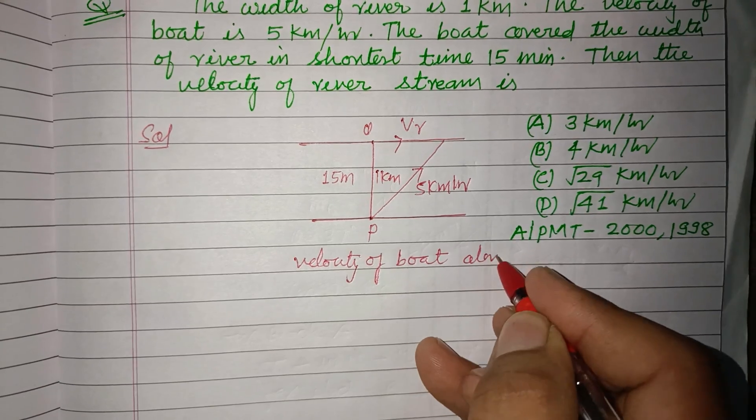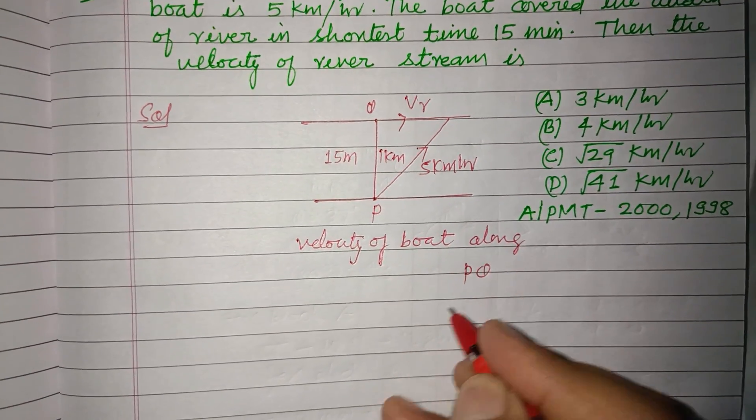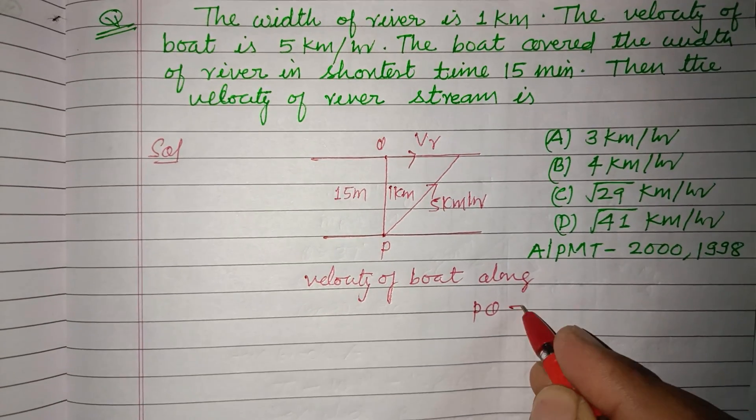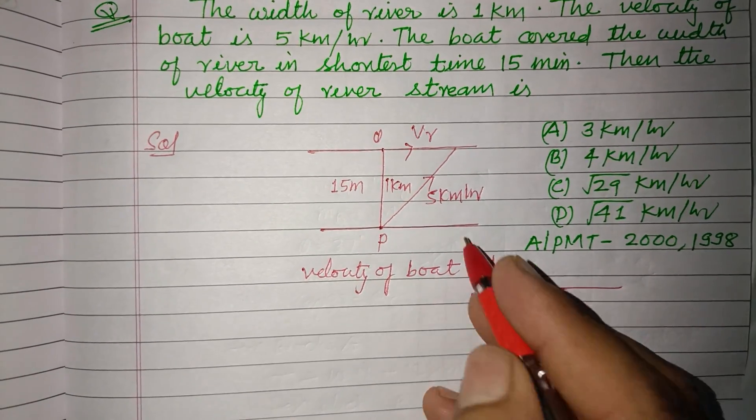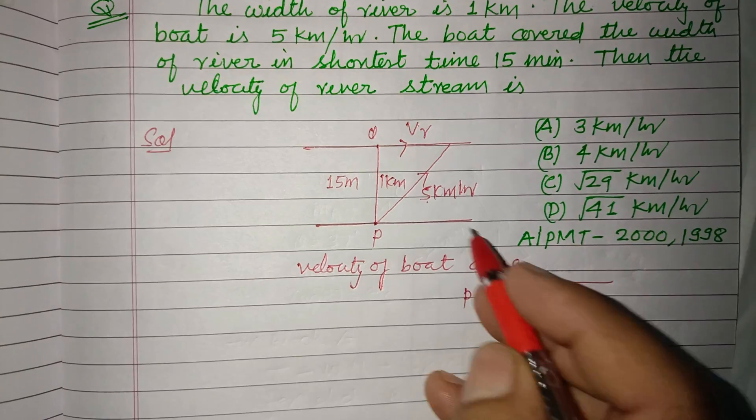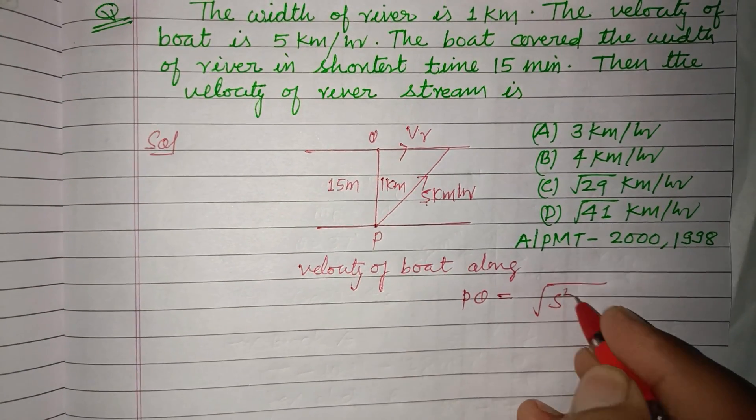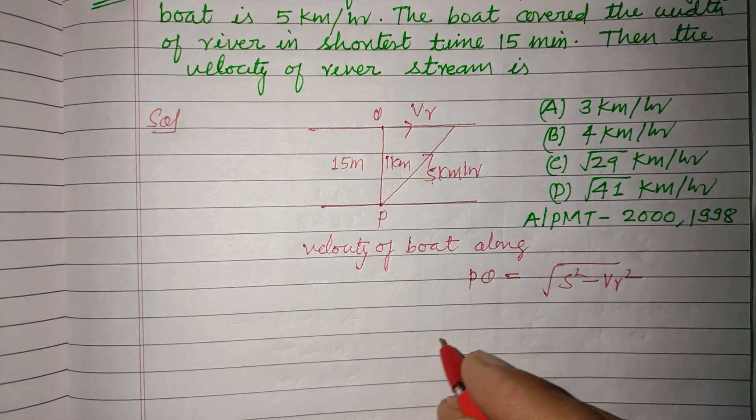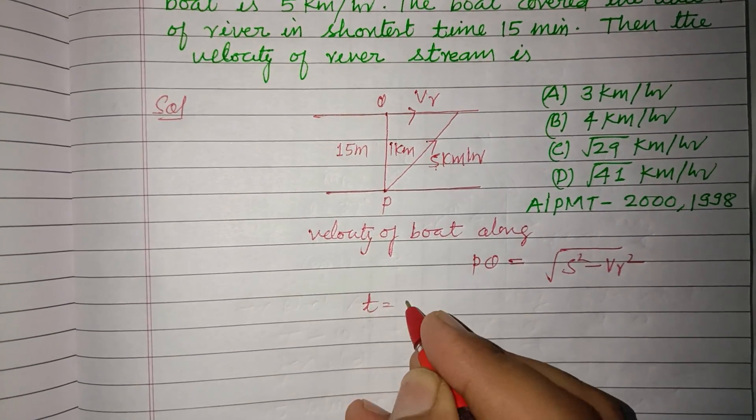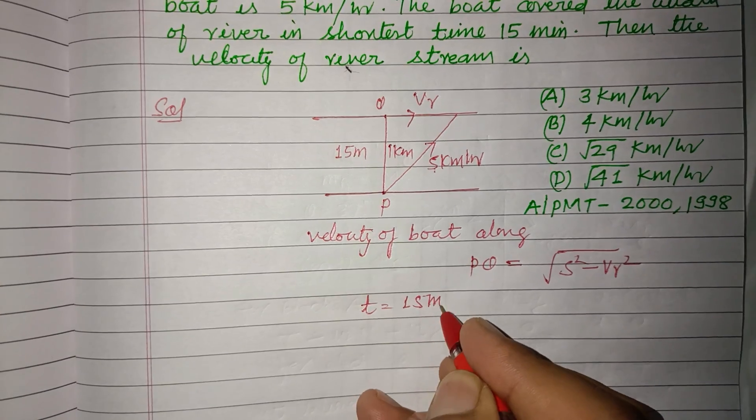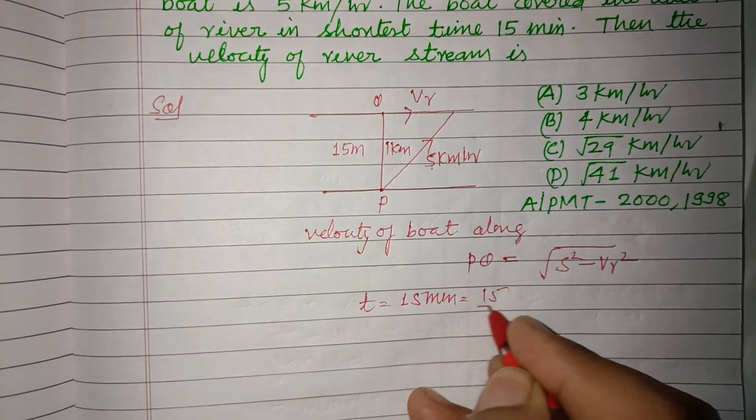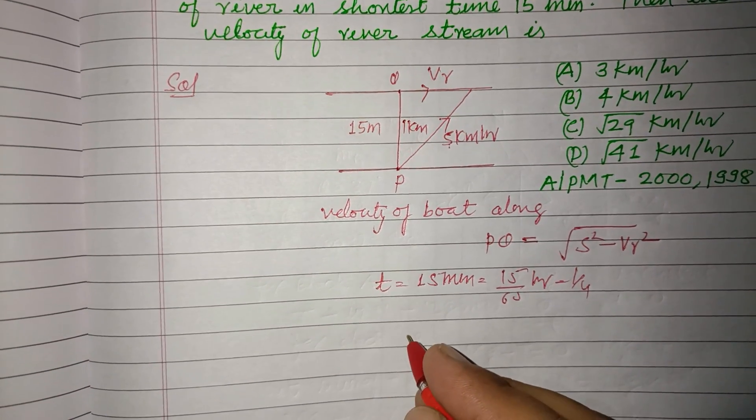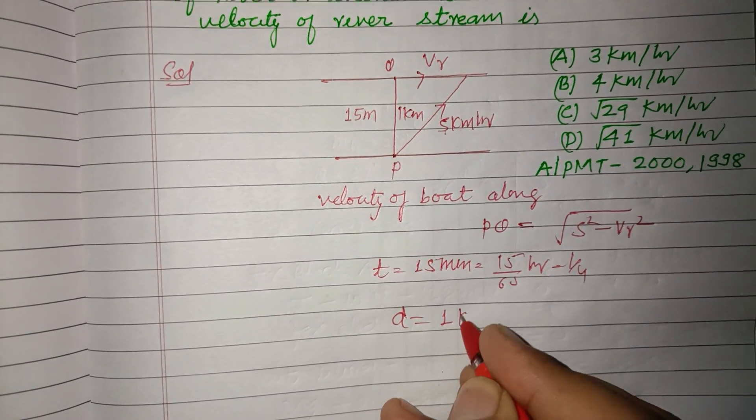So velocity of boat along PQ, this is using perpendicular: hypotenuse square minus base square. Time is taken 15 minutes. Speed, that is 15 upon 60 hour, one by four, and distance is 1 kilometer which is PQ.